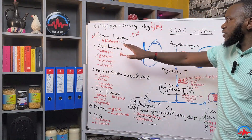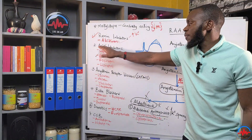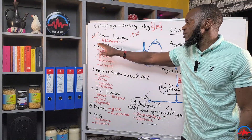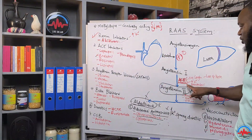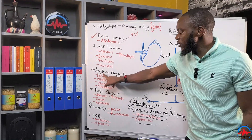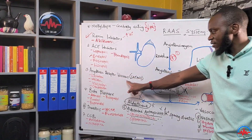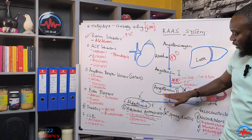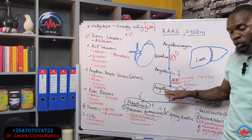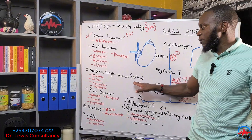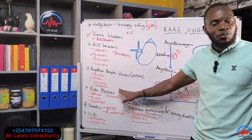So to recap: we have renin inhibitors at the first stage, ACE inhibitors that block the enzyme converting angiotensin 1 to 2, and then the sartans which block the attachment of angiotensin 2 to its receptors.